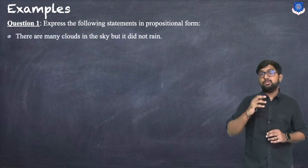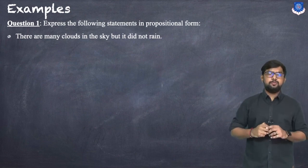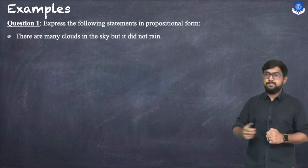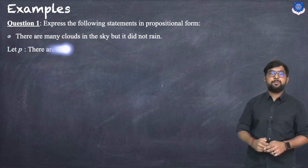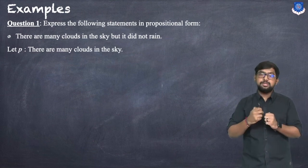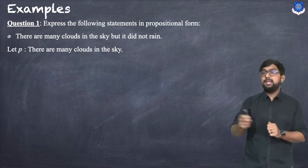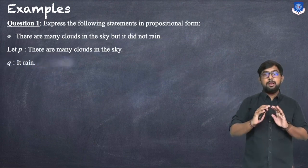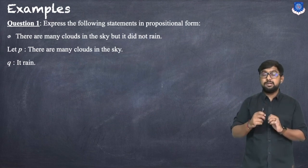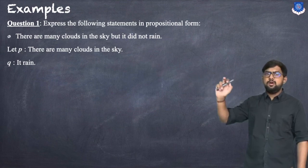The first statement is: 'There are many clouds in the sky but it did not rain.' We will divide the statement into parts. Let P = 'there are many clouds in the sky.' The second part involves 'it did not rain' — whenever there is a negation we convert it into positive form.